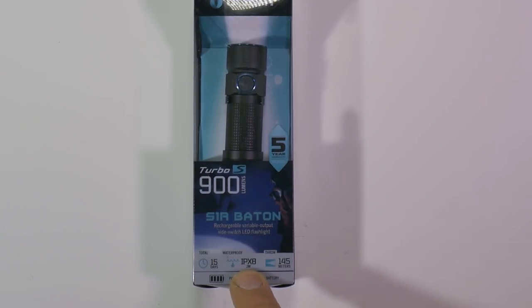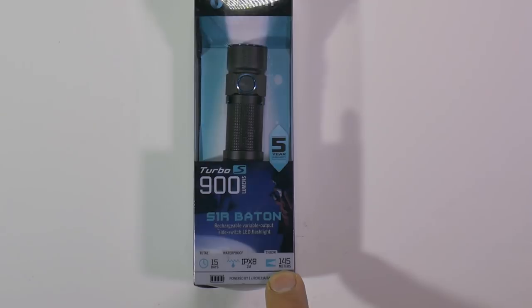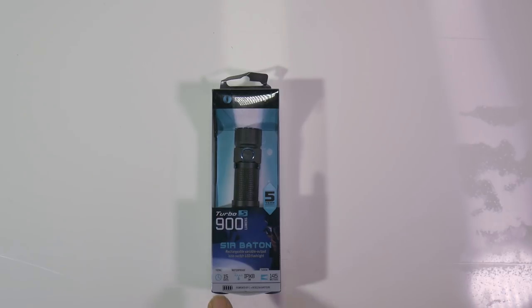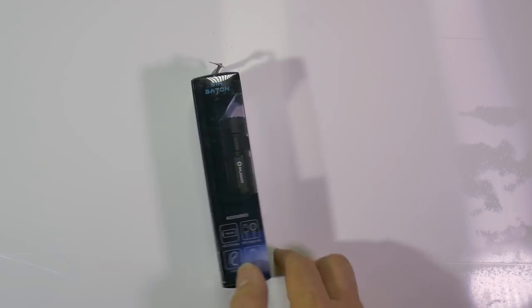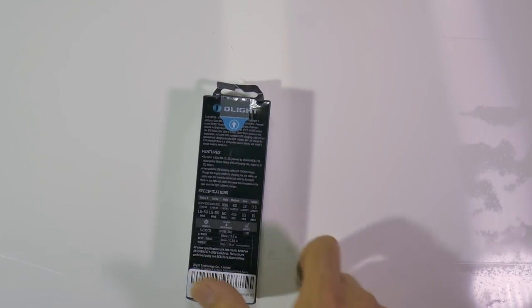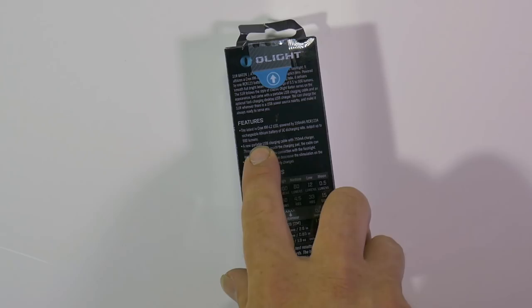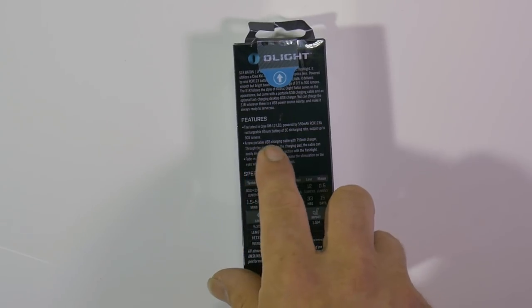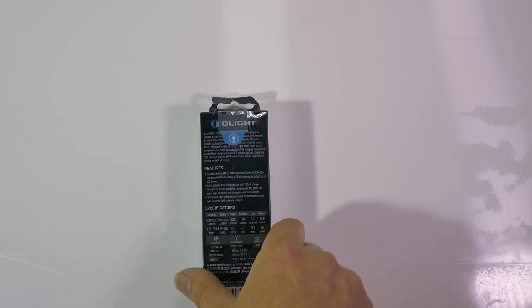We have a 145 meter throw and the batteries last up to 15 days according to the box there. This is using the latest Cree XM-L2 LED which is powered by a CR123A battery which is charged via USB.